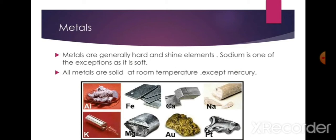All metals except mercury are solid at room temperature. Mercury is the only metal that is liquid at room temperature. Some of the metals are: aluminium, iron (ferrum, Fe), calcium, sodium, potassium, magnesium, gold, and platinum.